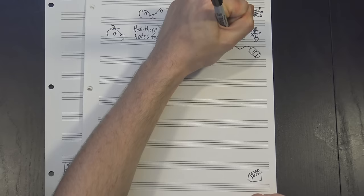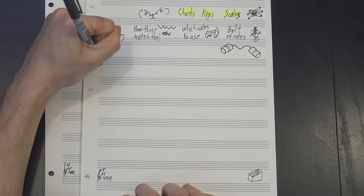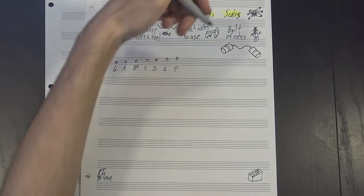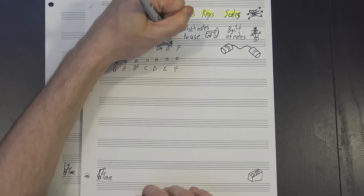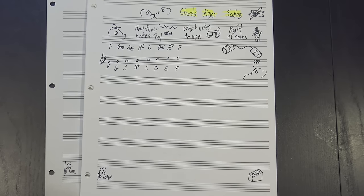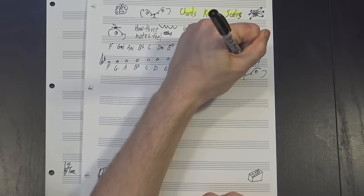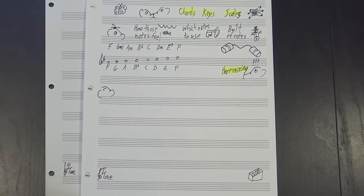Each scale and each key has a specific set of chords that goes along with it. For instance, F major has these, but how do we know that? Finding the right chords for a scale is called harmonizing, and it's actually pretty simple.